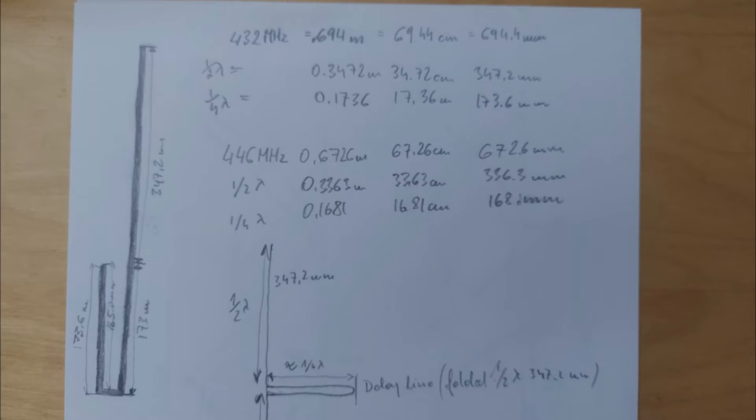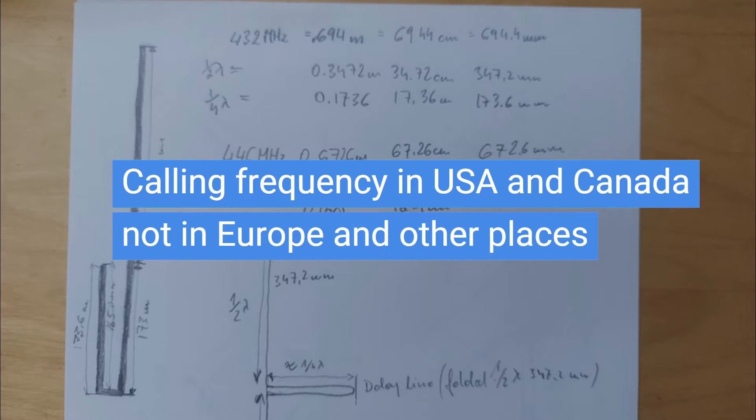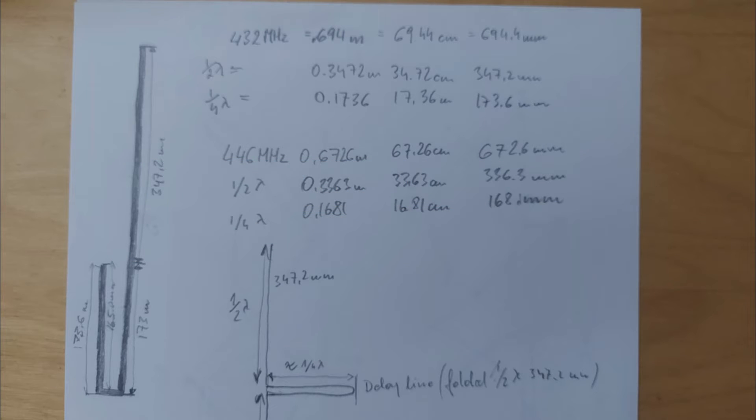In this picture, I'm showing you the dimensions that I used to build my own antenna. The one that I made is for 432 megahertz. So the entire length of the wave would be 69.4 centimeters. However, the half-wave section is about 34 centimeters and the quarter wave section is slightly longer than 17 centimeters. To compare this to the frequency used as a calling frequency, which is 446, the entire length would be 67 centimeters. So we are looking at like three centimeters difference.